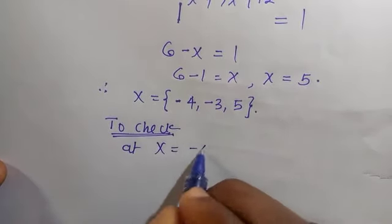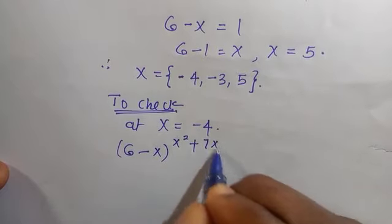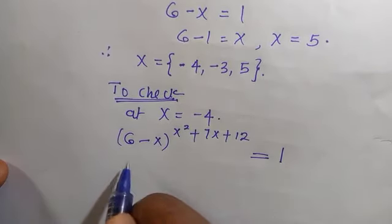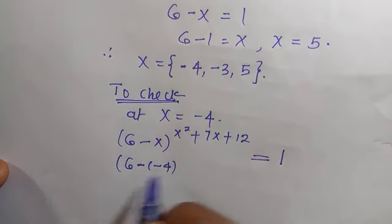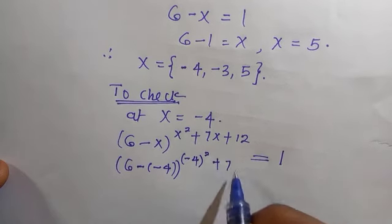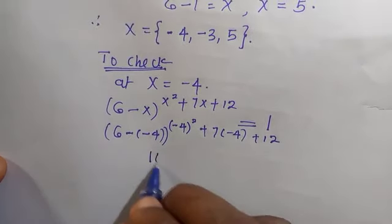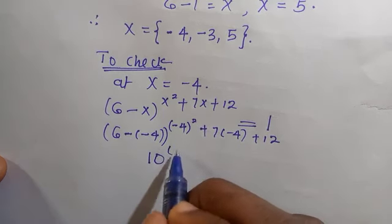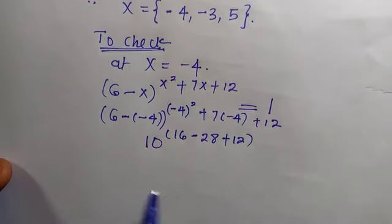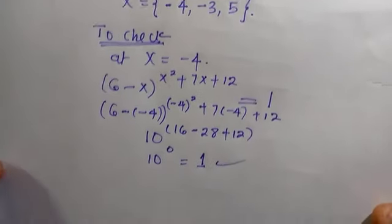At x = -4, we evaluate (6 - x)^(x² + 7x + 12). Substituting: (6 - (-4))^((-4)² + 7(-4) + 12) = 10^(16 - 28 + 12) = 10^0 = 1. This equals 1, so x = -4 satisfies the equation.